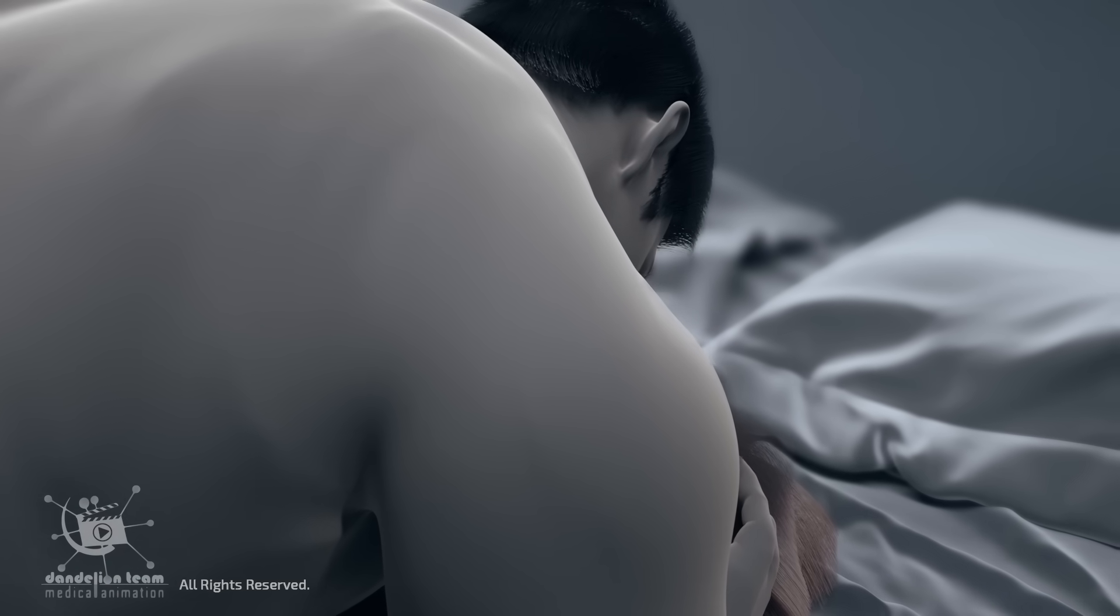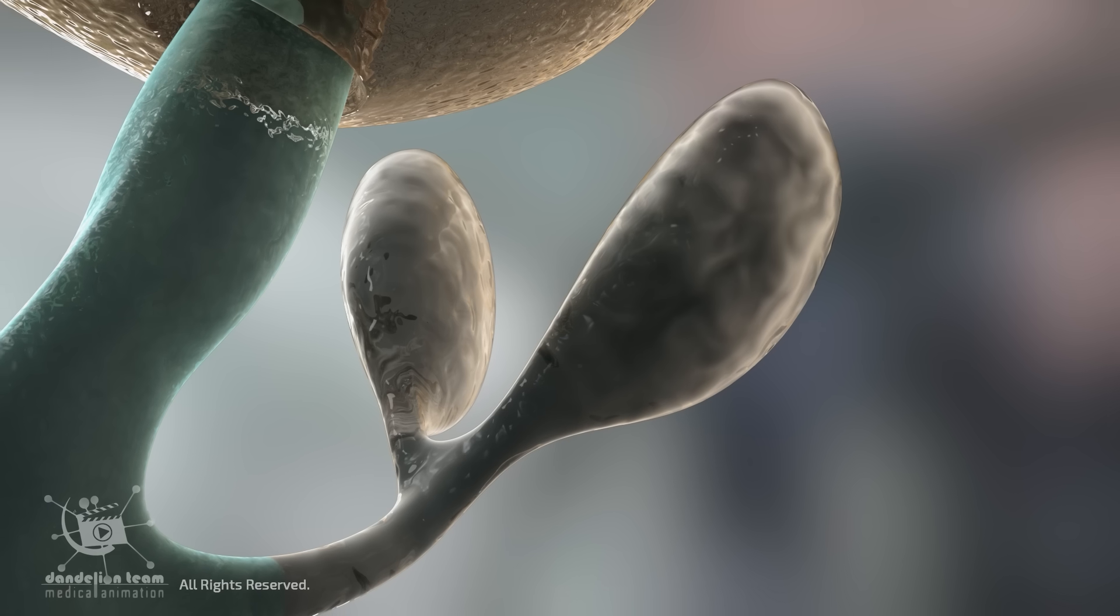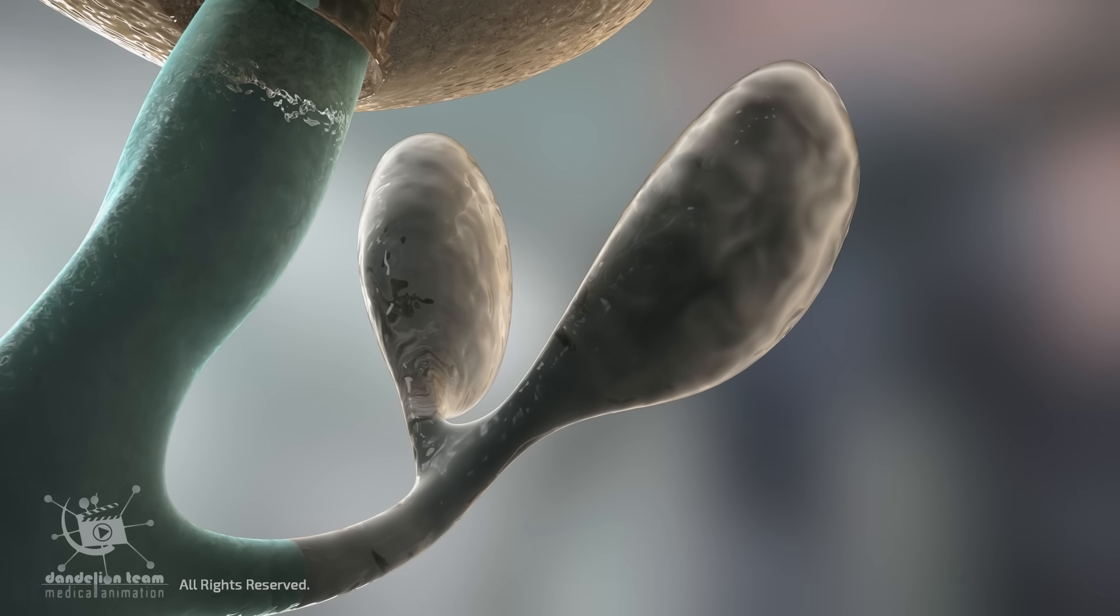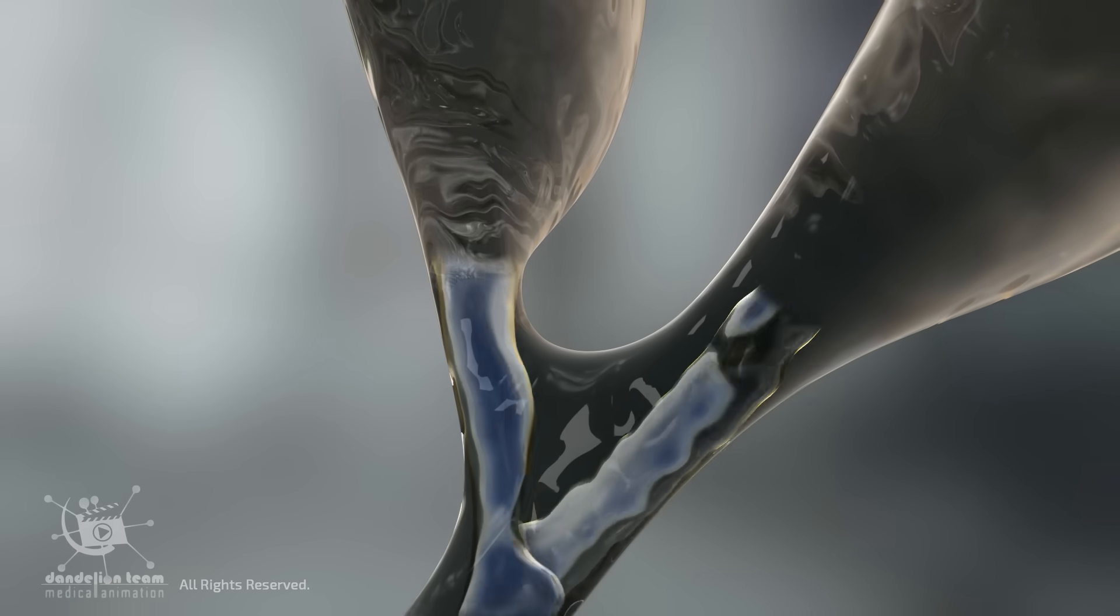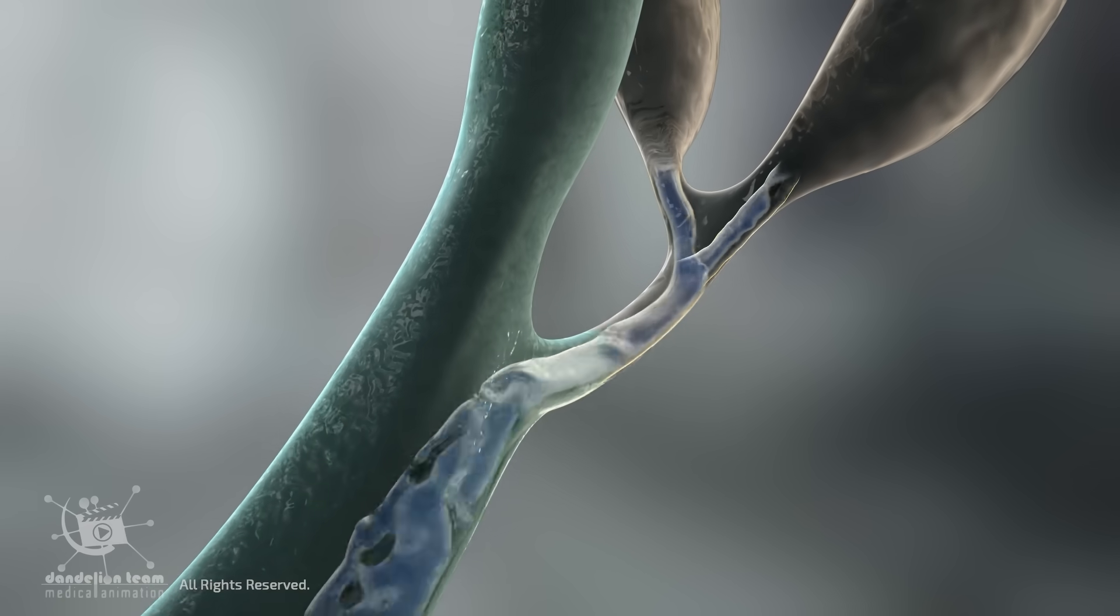At this stage, typically during the excitement or plateau phases, the Cowper's glands or bulbourethral glands contract, releasing a clear alkaline mucus-like fluid into the urethra.